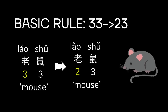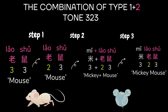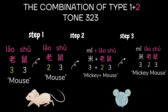老鼠 is a two-character word and is pronounced using the basic third tone change. Originally 老 and 鼠 are both pronounced with the third tone. Step one: the tone of 老 changes to the second tone, making the sound 老鼠. Step two: the two characters 老鼠 follow the first character 米 to form the three-character word 米老鼠. Step three: since 老 has already changed to the second tone, the character 米 can remain its original third tone, making the whole word pronounced as 米老鼠.